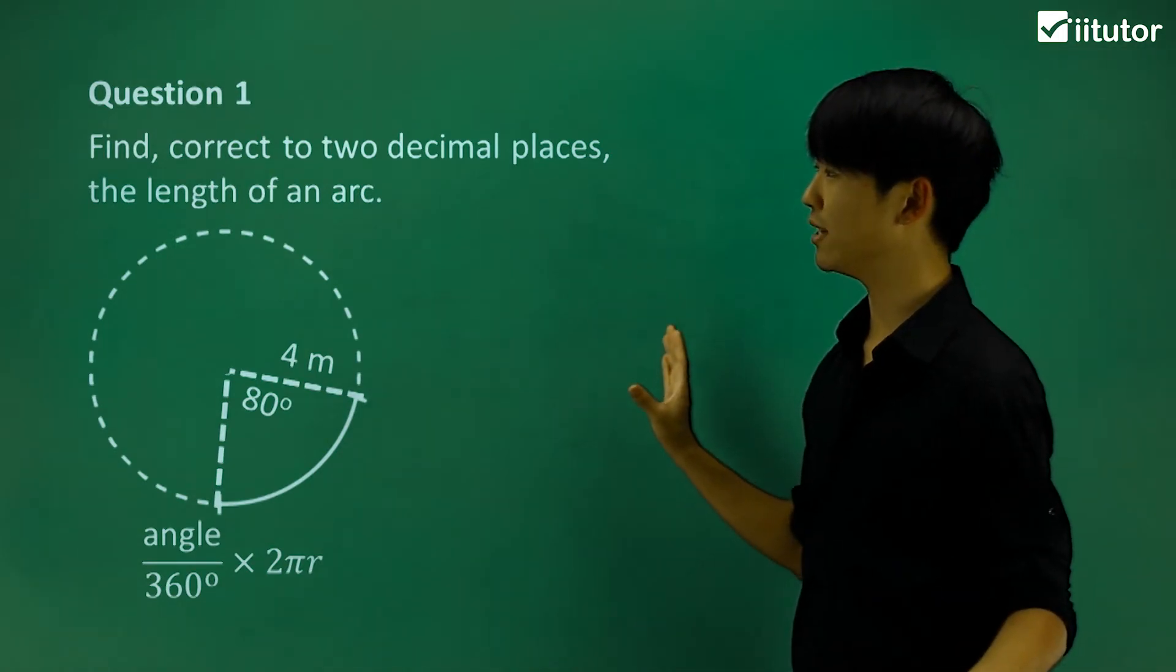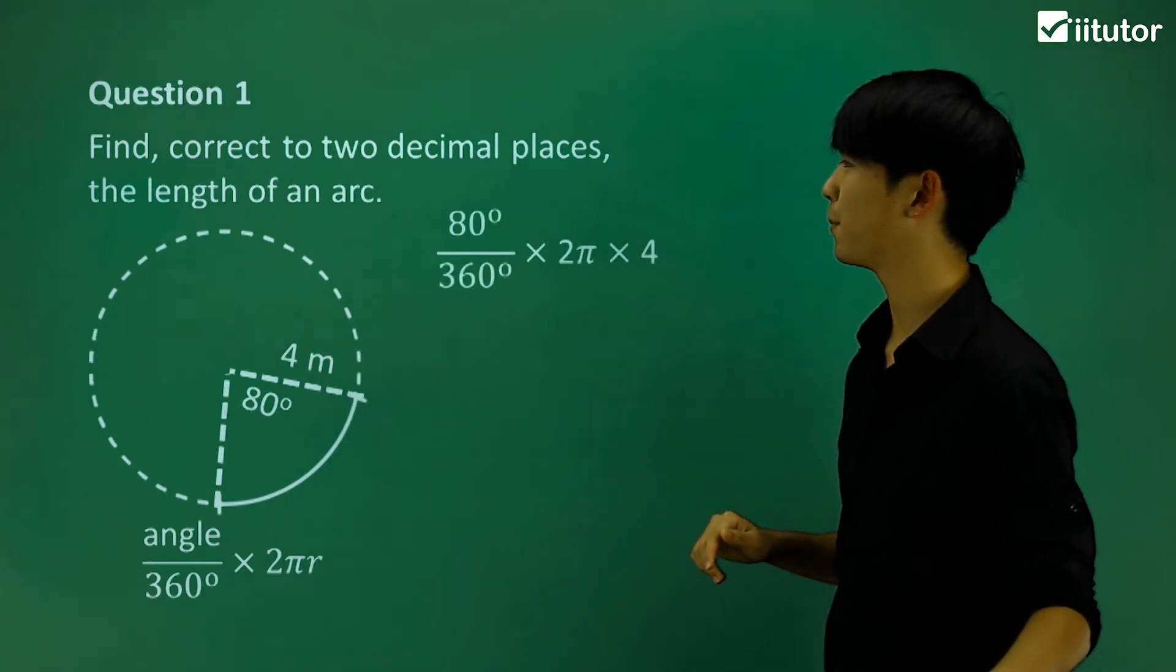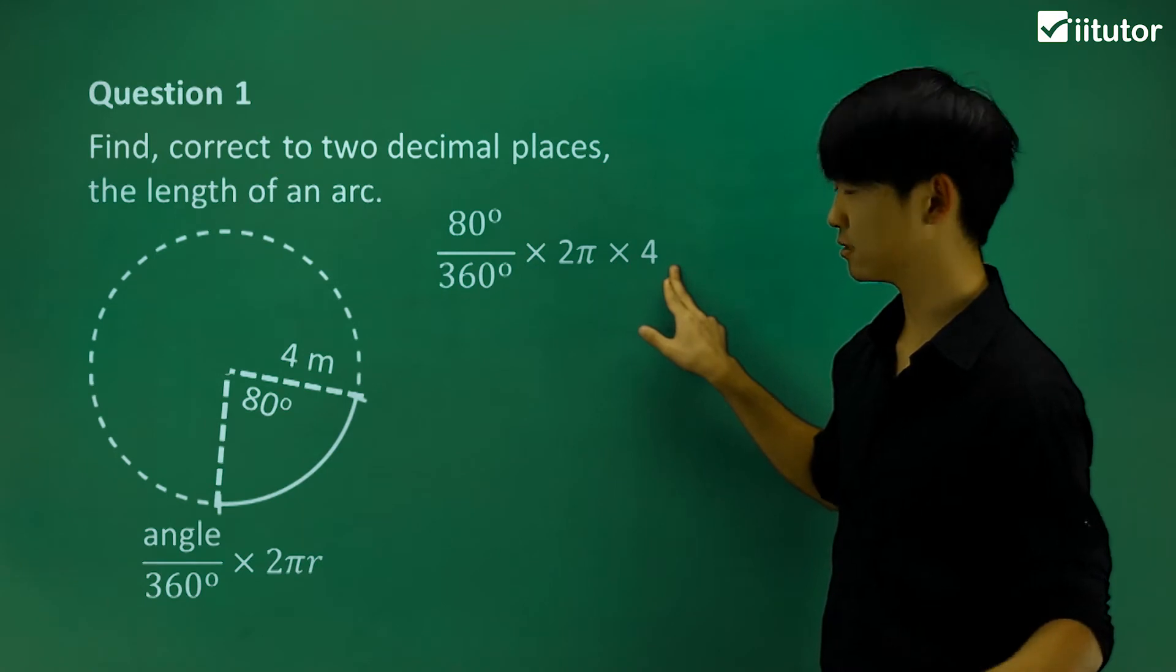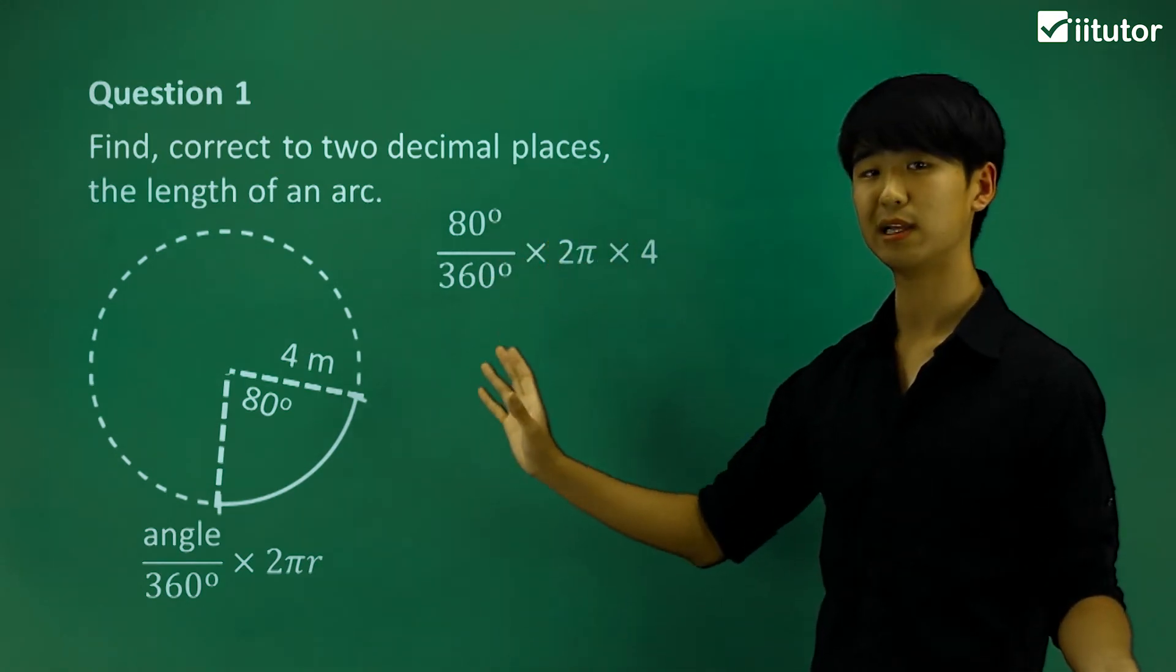So let's try and put in all the information that we do know. We know the angle and we know the radius. So my angle is 80 degrees and my radius is 4 meters. So if I calculate this, that should give me my length of the arc.